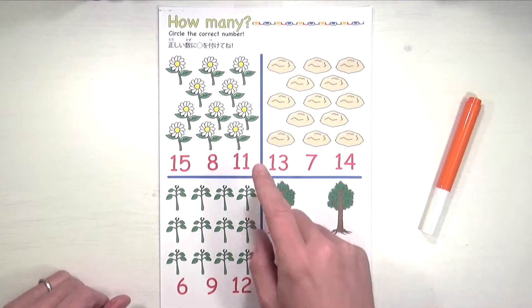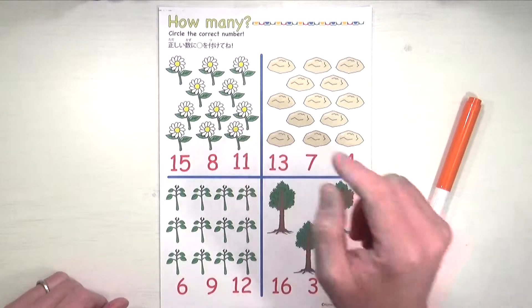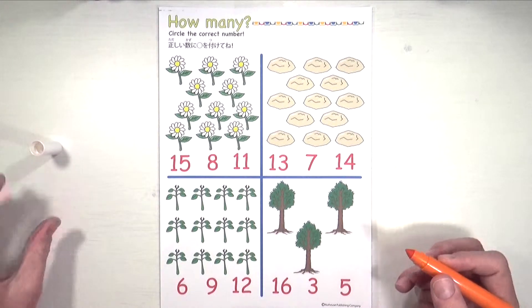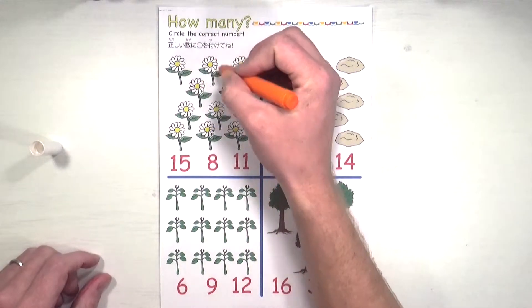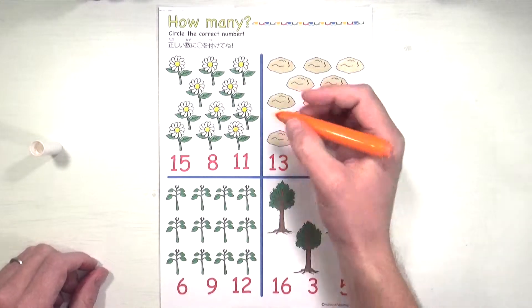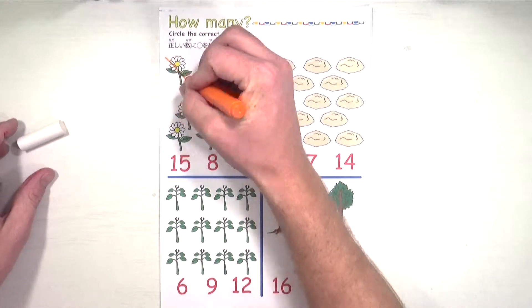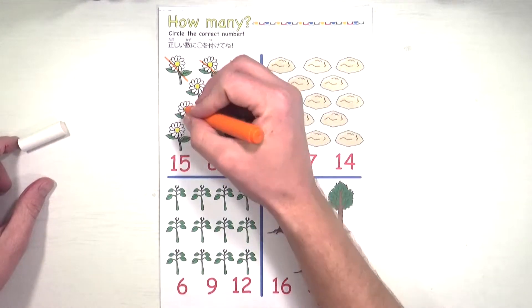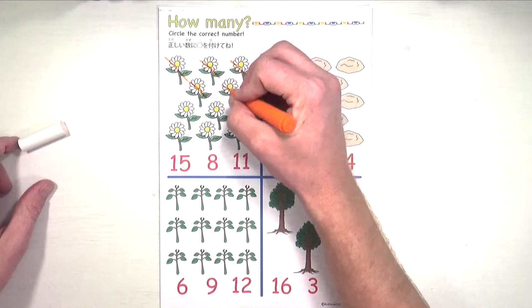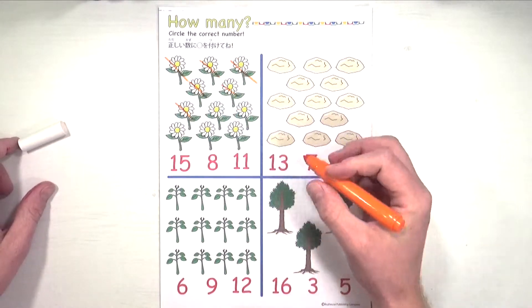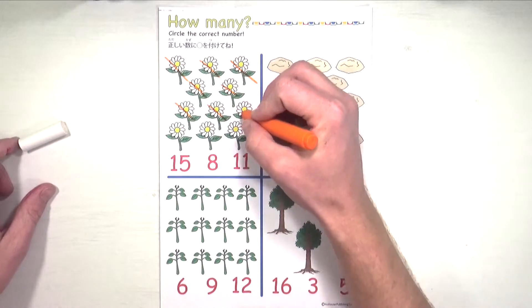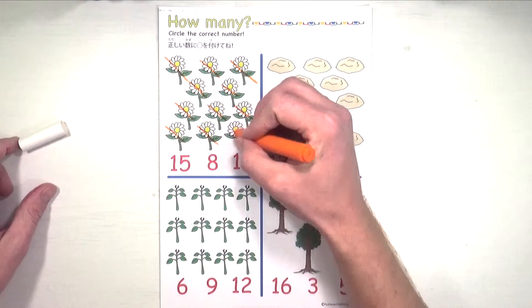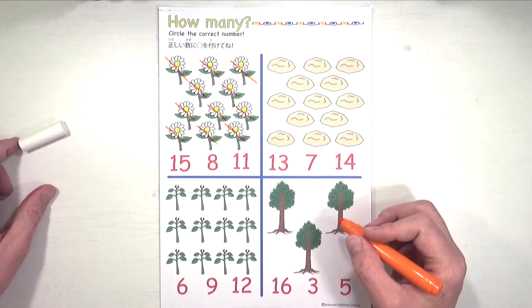Let's count and see if we can figure out which number goes with the right number of flowers. Here we go. Let's count and we'll cross it off as we go. Ready? One, two, three, four, five, six, seven, eight, nine, ten, eleven. Eleven flowers.